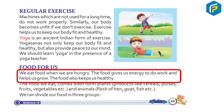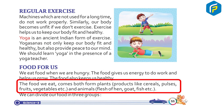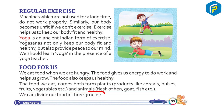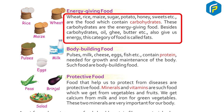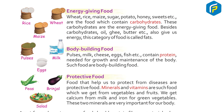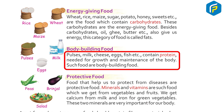We eat food when we are hungry. Food gives us energy to do work, helps us grow, and keeps us healthy. Food comes from both plant products like pulses, fruits, and vegetables, and from animals like meat, fish, etc. Energy-giving foods include wheat, rice, maize, sugar, potato, and honey — foods that contain carbohydrates. Oils, ghee, and butter also give energy and are called fats.